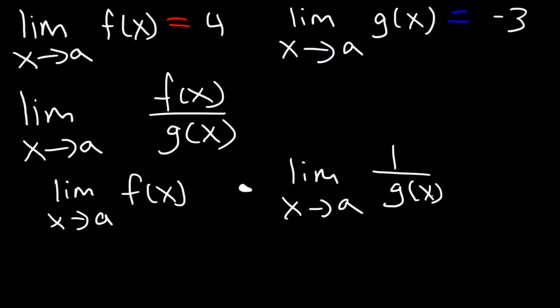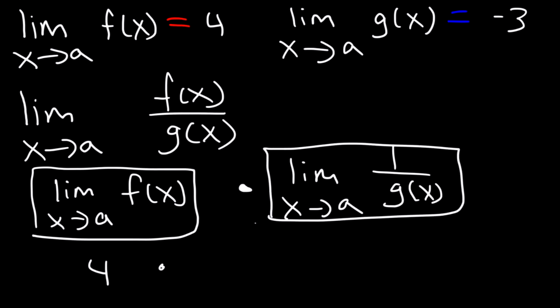f times 1 over g is the same as f divided by g. So, we know the first part is simply equal to 4. The second part is going to be 1 divided by negative 3. So, the final answer is negative 4 over 3.